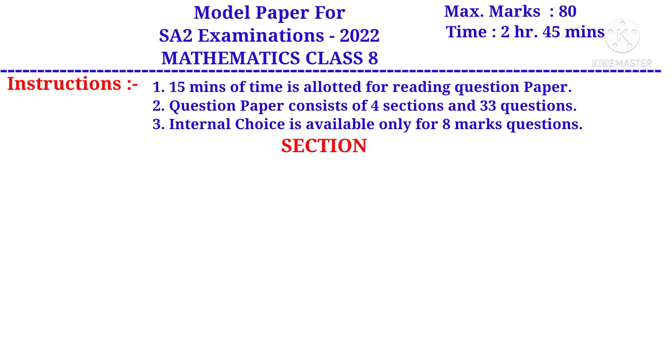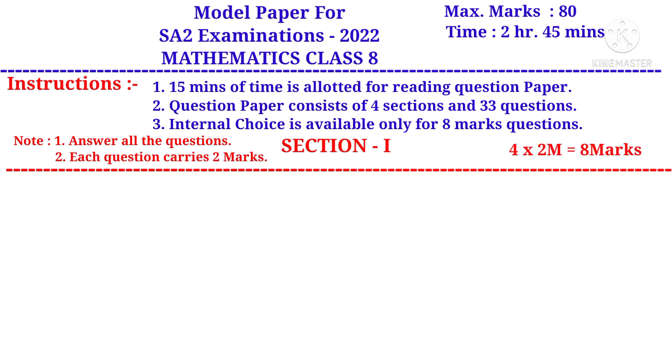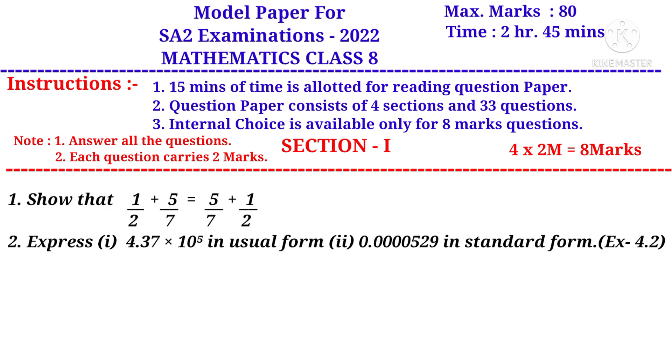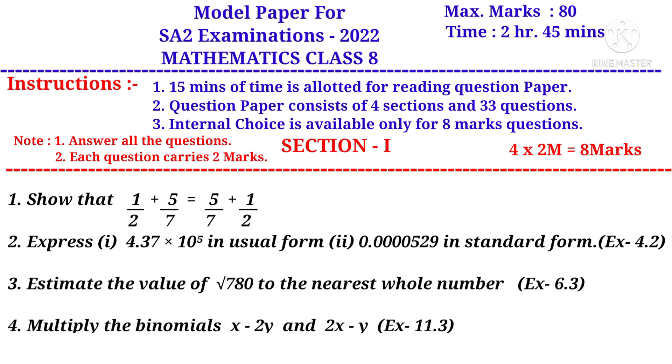Now let us take Section 1. Note: answer all the questions, each question carries 2 marks, there are 4 questions, so 4 into 2 marks is 8 marks. First question: Show that 1/2 + 5/7 is equal to 5/7 + 1/2. It is a question from the first chapter.